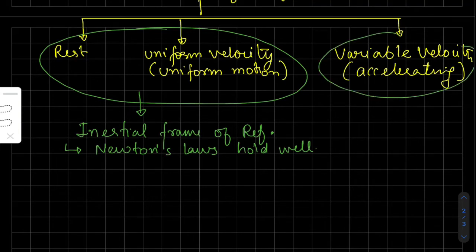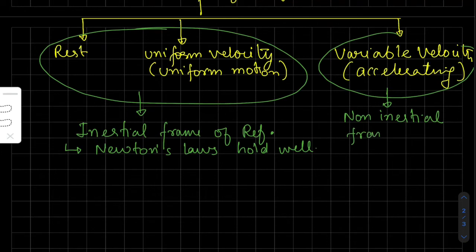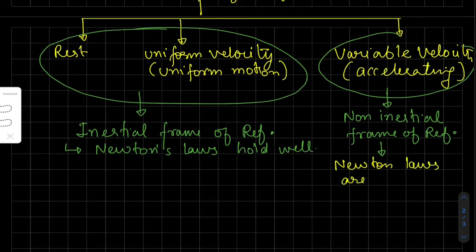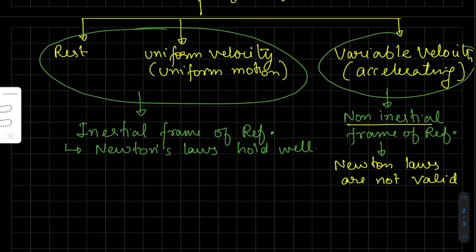This reference frame is called a non-inertial frame of reference, and here Newton's laws are not valid — we cannot apply the direct equations of Newton's laws. In the case of variable or accelerating frame of references, or non-inertial frame of references, we can solve numerical problems in Newtonian mechanics, but we need to do some extra effort. We need to handle the pseudo force. We will talk about later what the pseudo force is and how to solve numerical problems with the help of pseudo force when the frame of reference is non-inertial.